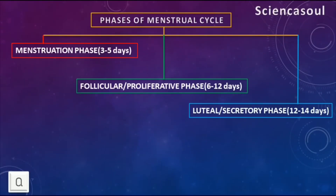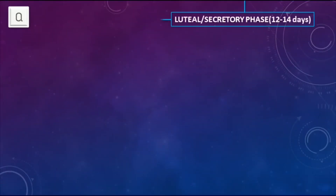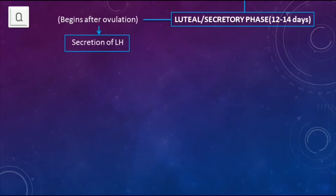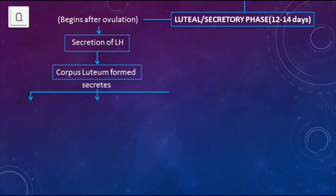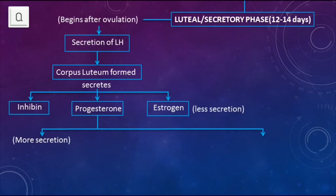The third phase is the luteal or secretory phase, which lasts for twelve to fourteen days. It begins after ovulation. Secretion of LH causes the corpus luteum to form and secrete estrogens in lesser amounts and progesterone.